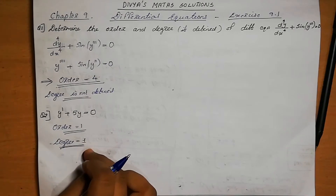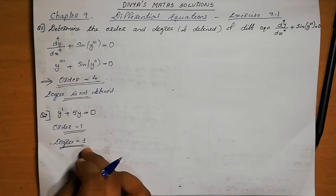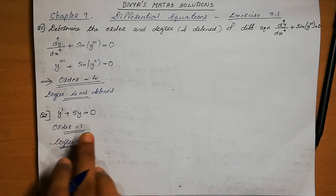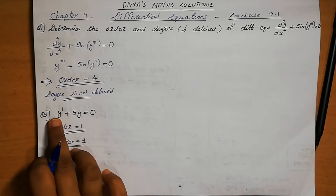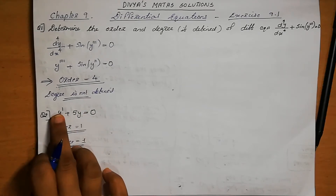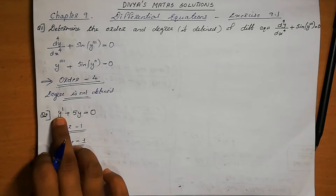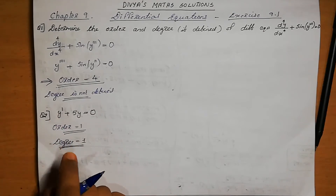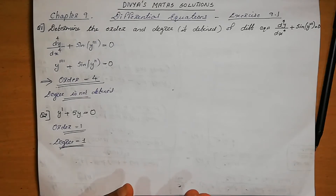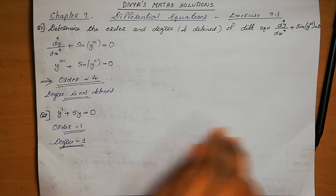If the equation is in the form of a polynomial, we check the power of the highest order derivative term. Here, y' (dy/dx) has power 1. So the degree is equal to 1.